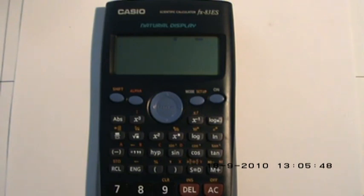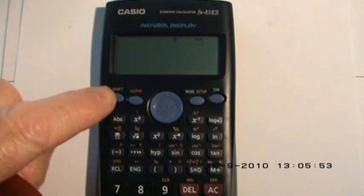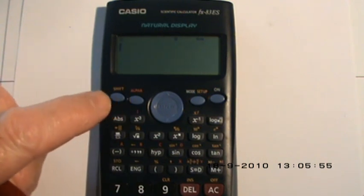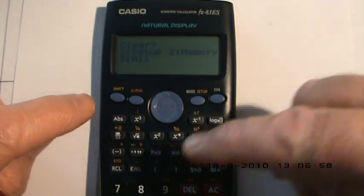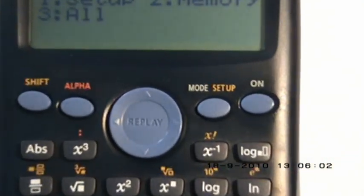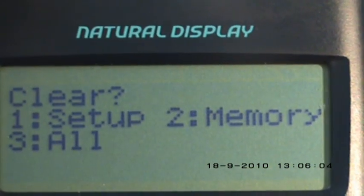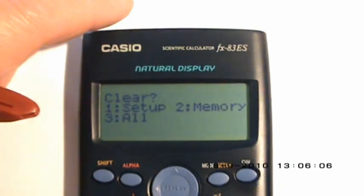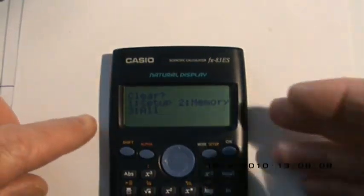The calculator operates in different modes, so you must restore the default mode to start with. You do this by pressing shift, then press 9, and you'll see on screen it says 'clear'. On top it says 'clear setup, memory, or all'. What you want to do is set it up.